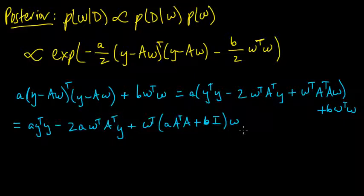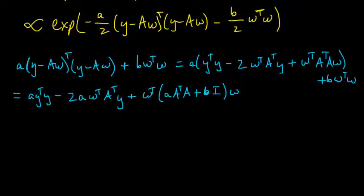Right, we can move the b in between and put an identity matrix in there. Okay. It's looking good. And now, what do we want to do? We want to get this to look like a Gaussian. Right. So here's a little trick you can do. It's a very convenient little trick.